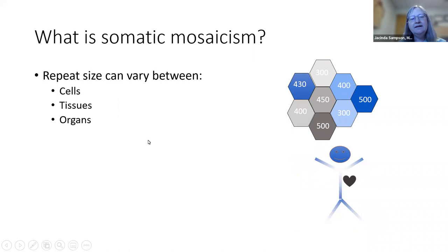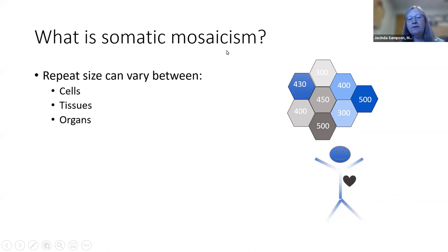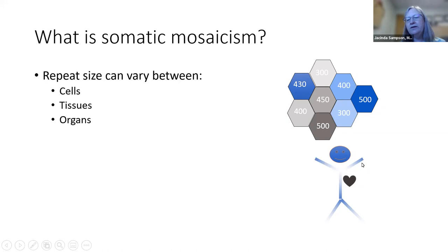The change in repeat number between tissues continues in adulthood and is called somatic mosaicism. Your proximal muscles might have a lower number than your distal muscles; your brain, heart, and other tissues may each have different numbers. This helps explain why different people have such different symptoms and why myotonic dystrophy affects different tissues so differently.